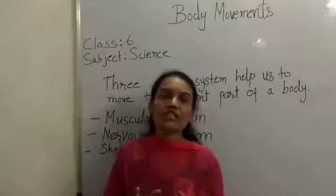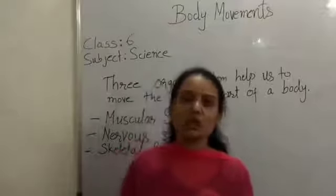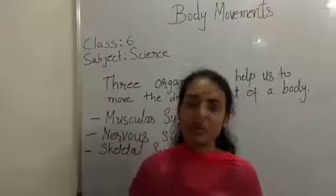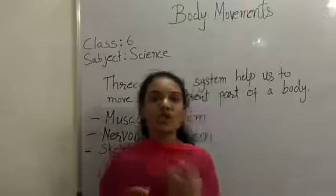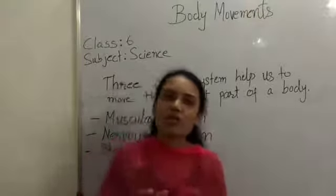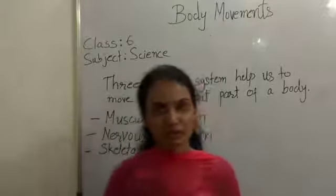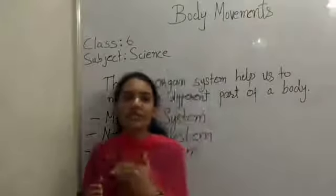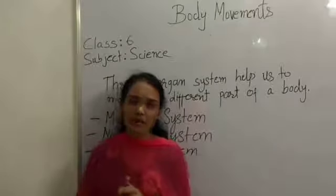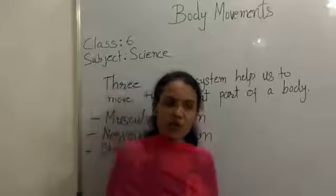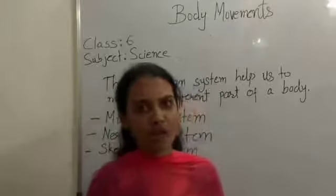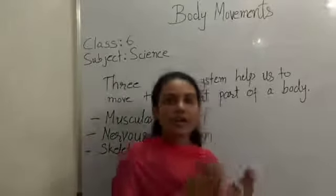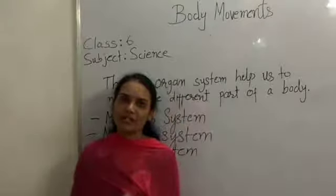First of all, what is a skeleton? You have already seen what a human skeleton looks like. The question is: how many bones are present in the human skeleton? In an adult human, there are 206 bones. In a newborn, there are 305 bones, and in children there are 300 bones.